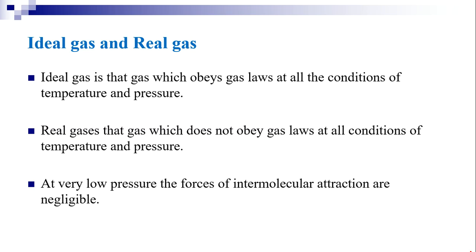An ideal gas can be defined as a real gas at low pressure. That means at low pressure, a real gas can be considered as an ideal gas. For a real gas, the internal energy is a function of pressure and temperature. For all practical purposes, a real gas below a pressure of 2 atm can be considered as an ideal gas.